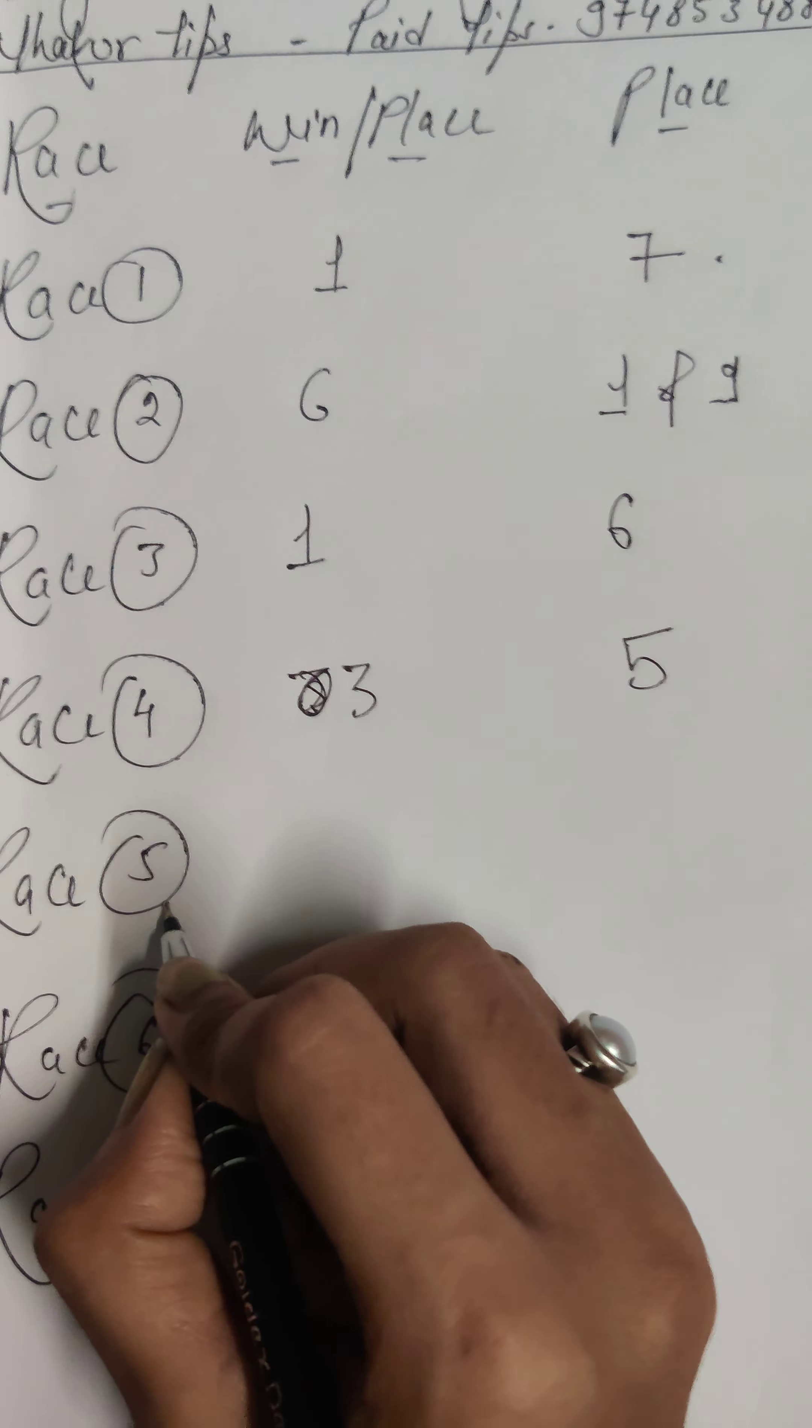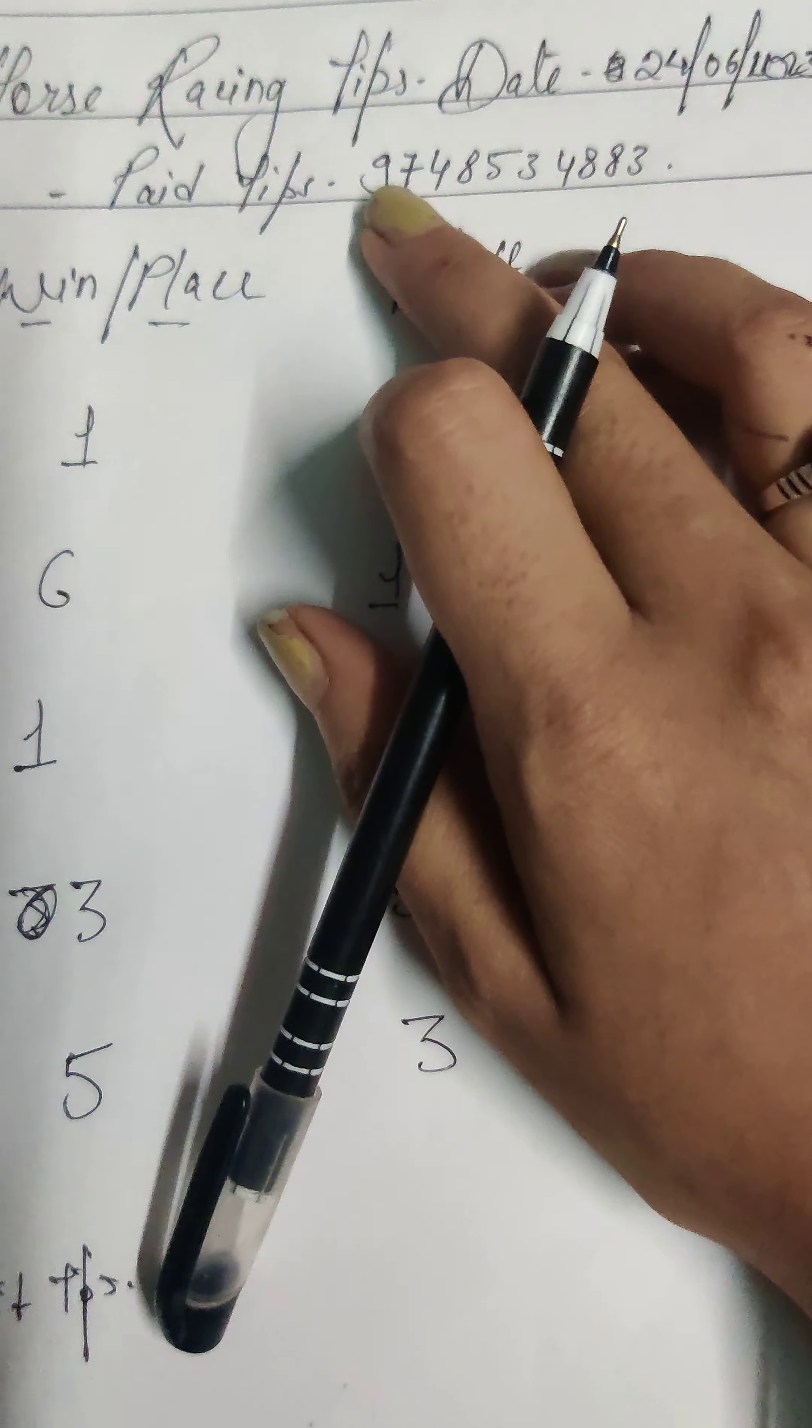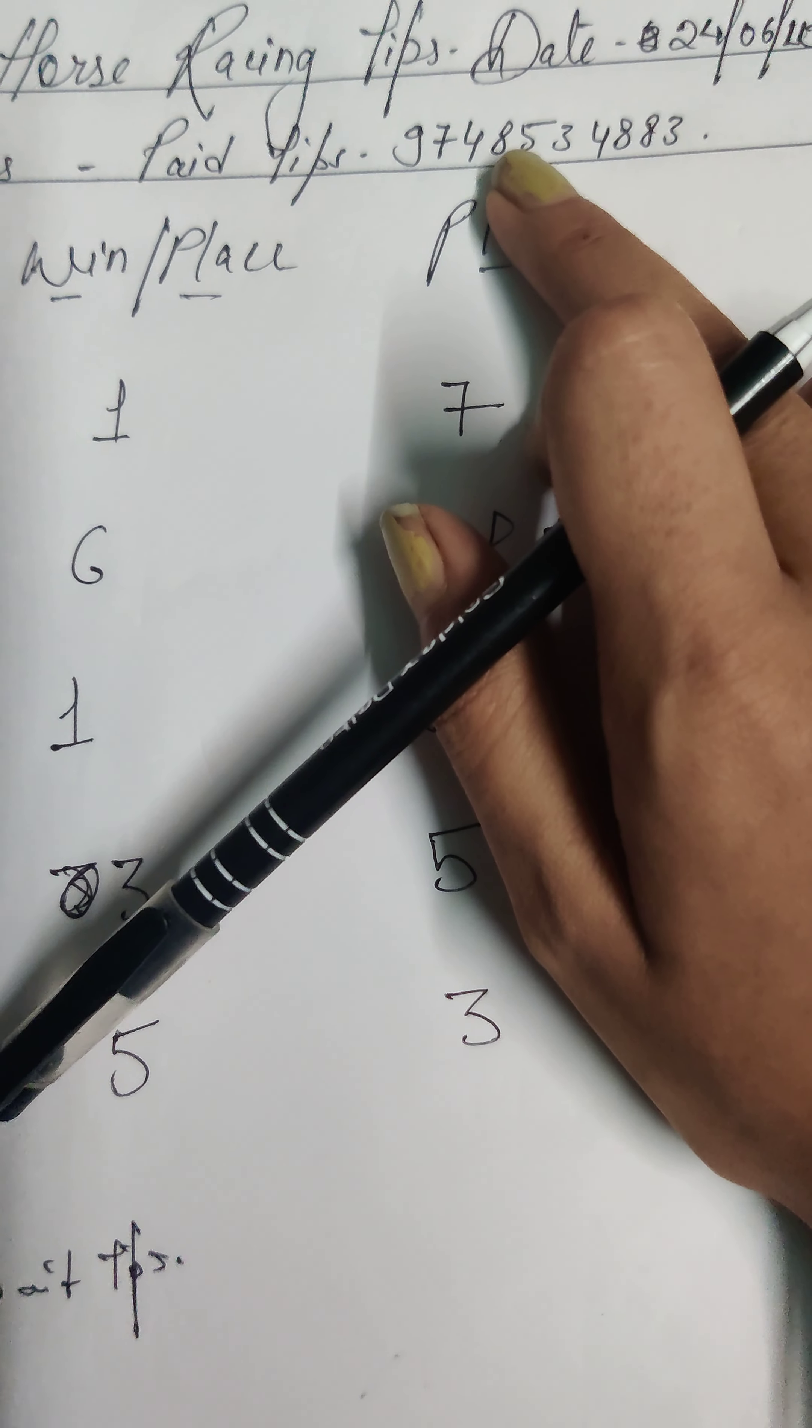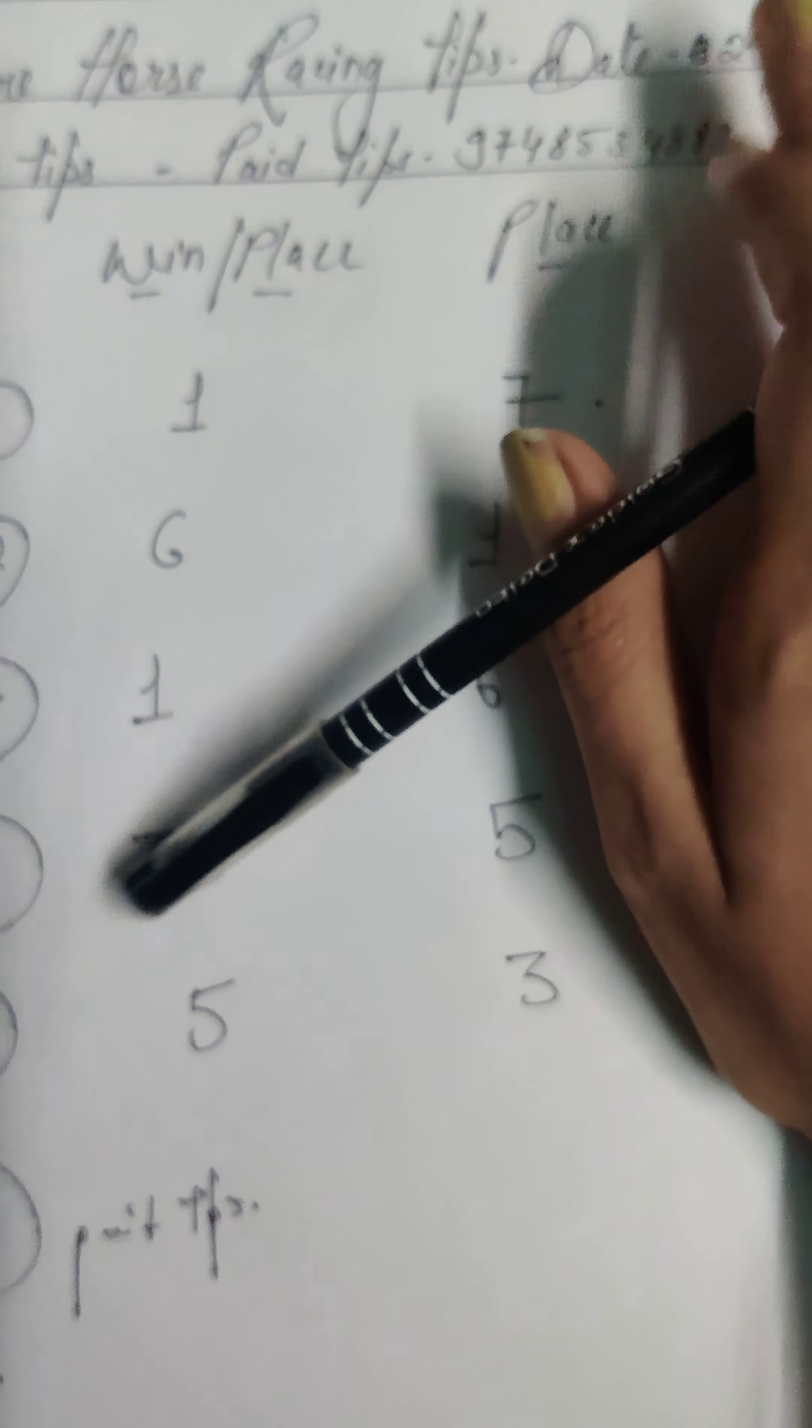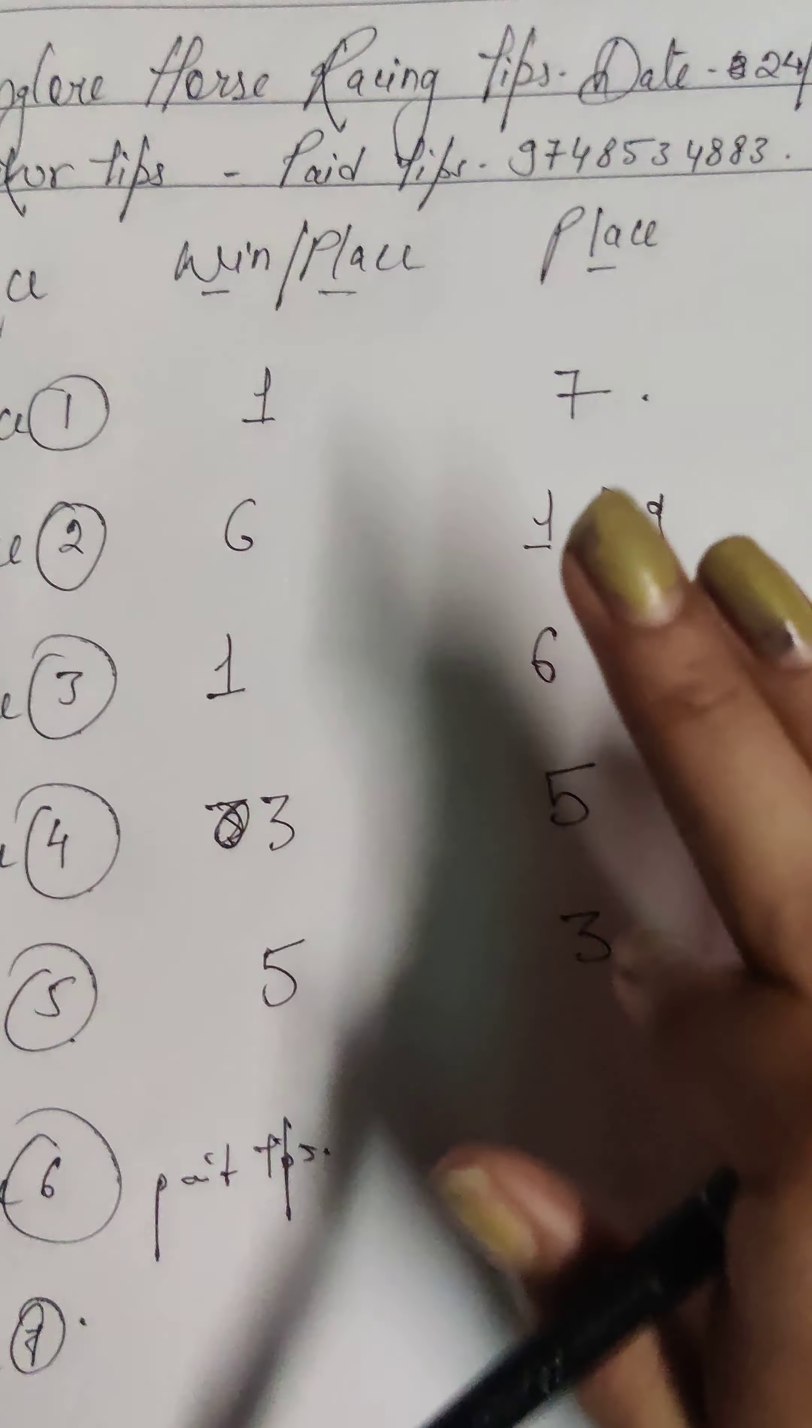Race number 6, race number 6 is my paid tips. Will have to dress. So who also needs paid tips and selection, who will send me to this number message, 974-533-433. This number description box will also mention that, so you can send me message to this number and the information I'll provide you after payment, and I'll provide you the most paid tips and selection.